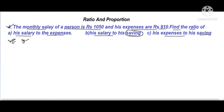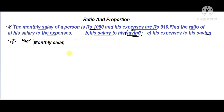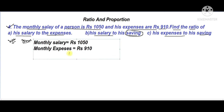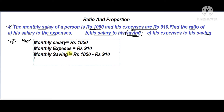Given: monthly salary is rupees 1050, and monthly expenses are rupees 910. Monthly saving equals salary minus expenses, so 1050 minus 910.